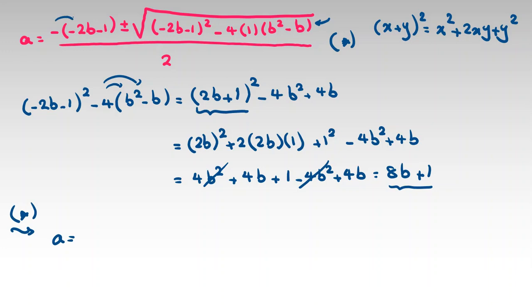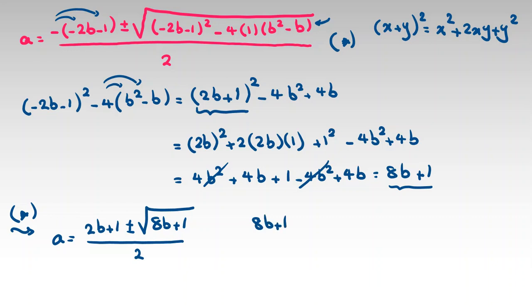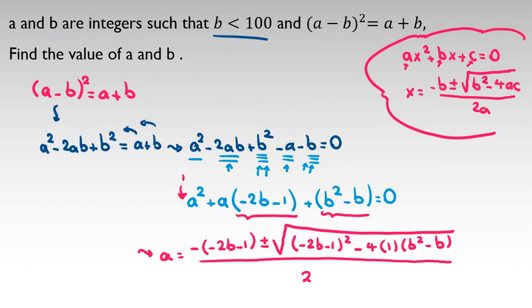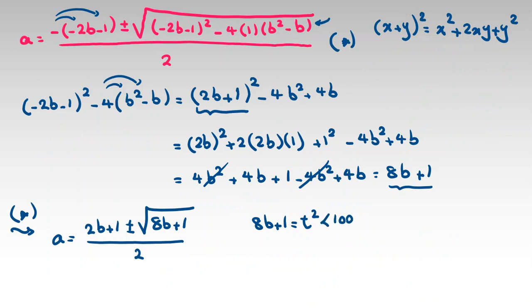So A equals 2B plus 1 plus or minus square root of 8B plus 1, all over 2. For A to be an integer, 8B plus 1 must be a perfect square. Let's call it T squared. In the assumption, B is less than 100, so T squared is less than 801. Also, 8B plus 1 is always odd, so T must be odd.